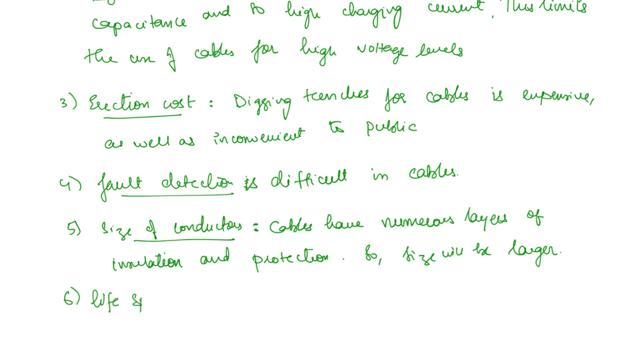Finally, last one is the lifespan. In the case of cables, insulation deterioration is going to occur because it is insulated all around through the length, and that insulator will deteriorate over time. Once the insulator is deteriorated, the cable has no life. Lesser lifespan because of insulation deterioration.